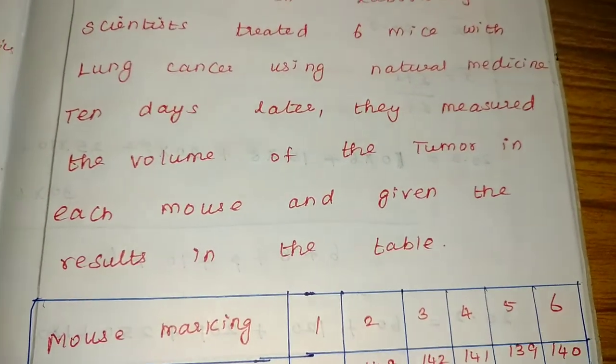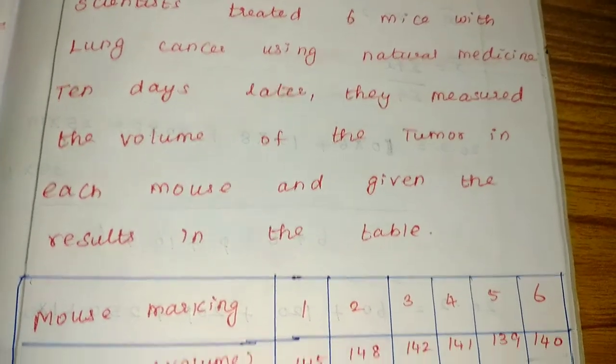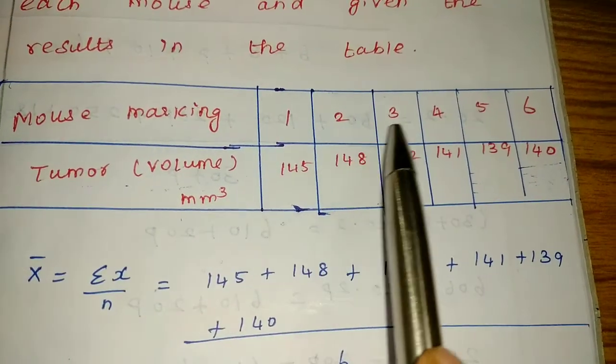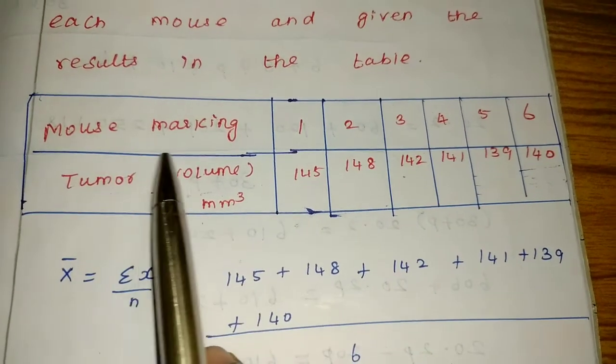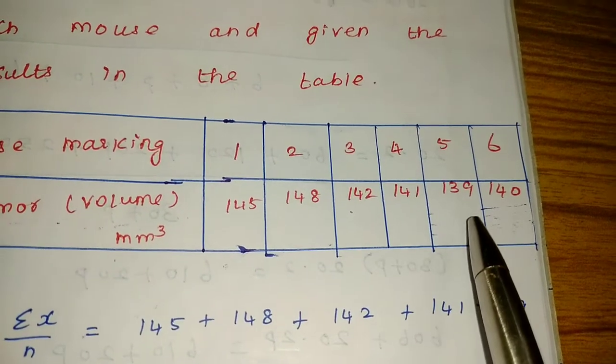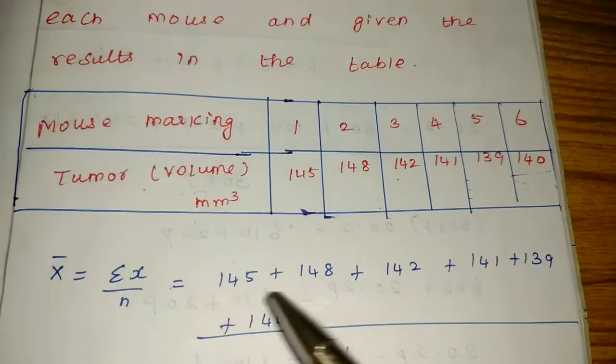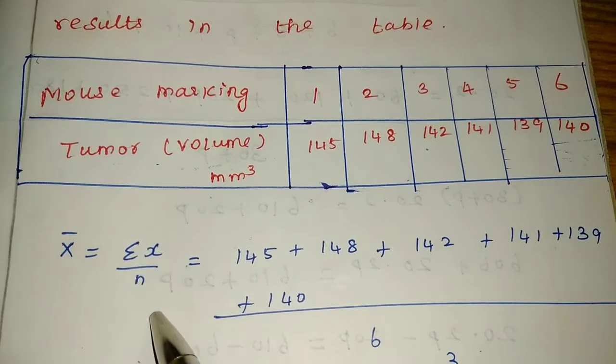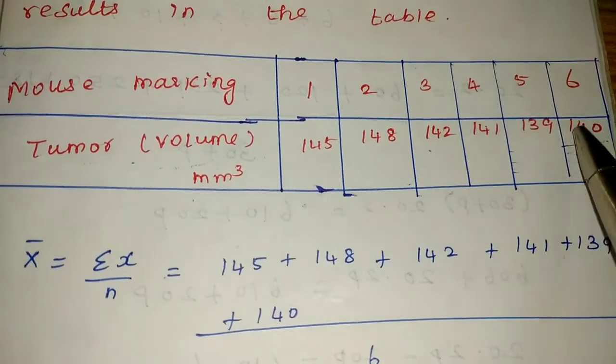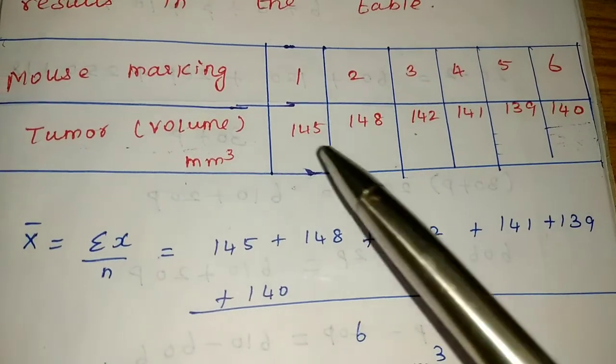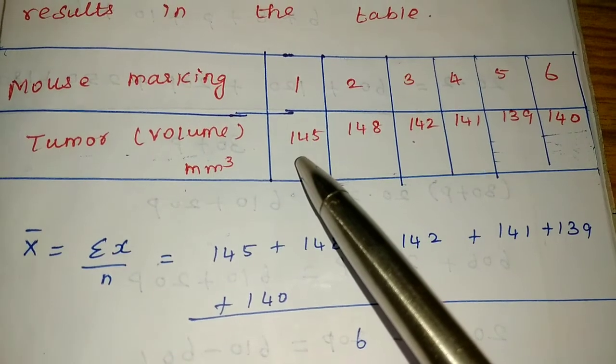So we have 6 mice numbered 1, 2, 3, 4, 5, 6. The tumor volumes are 145, 148, 142, 141, 139, 140. So the formula is x bar equals sigma x by n. Sigma x by n, where number of mice is 6. So we need to add all the volumes.